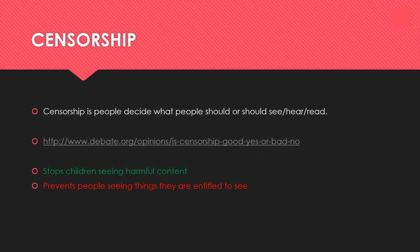Censorship is the process of people deciding whether you should or shouldn't see something. On one hand, it stops children in particular from seeing harmful content they shouldn't see. On the other hand, it prevents people from seeing things they are entitled to and may want to see without any actual harm — so there are valid arguments on both sides.